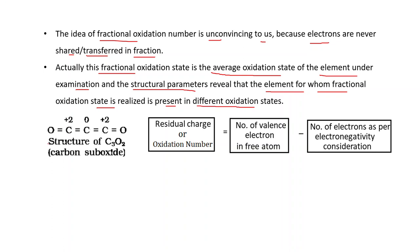Let us look at carbon suboxide again. In its structure, the oxidation number of the middle carbon is 0, and the oxidation numbers of the two side carbon atoms are each +2. Each carbon atom has a different oxidation number. If we take the average — (2 + 0 + 2) divided by 3 — we get 4/3.